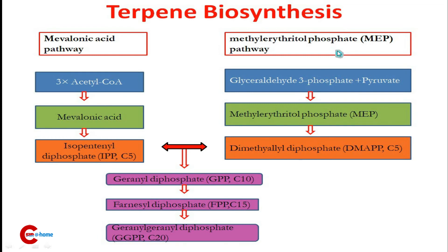In the methyl erythritol phosphate pathway, glyceraldehyde-3-phosphate and pyruvate combine to form methyl erythritol phosphate, which is then converted to dimethylallyl diphosphate (DMAPP). DMAPP is the isomer of isopentenyl diphosphate (IPP); both are C5 units. IPP and DMAPP combine to form geranyl diphosphate, a C10 unit.